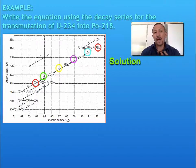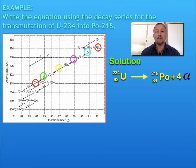Four alpha particles have been released in that decay. We write the equation: uranium-234, that's what we started with, goes to produce our new element polonium-218 and releases 4 alpha particles.